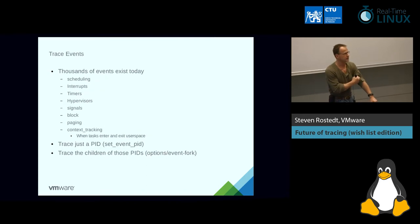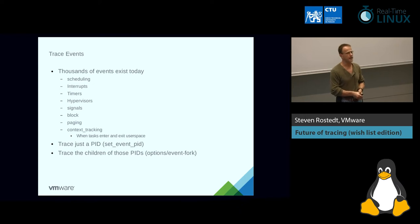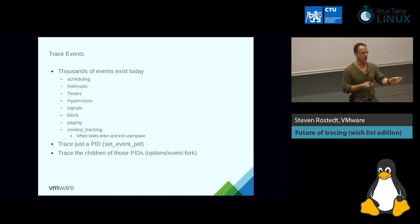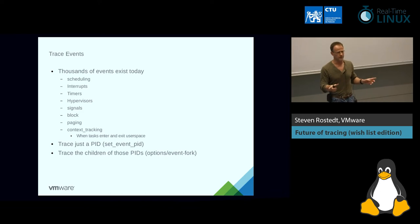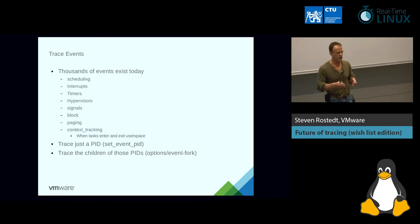Trace events: there are thousands of them today, and I'm sure if you've used ftrace you've used trace events. There's stuff for scheduling, interrupts, timers, things for hypervisors, and everything else. There's also set_event_pid so you can say you only want to trace a certain task, and there's the event_fork option if you're interested in tracing not just the task you put in but also any forks it does. This is a different utility than the ftrace function tracing utility - they're separate, so you have to put your PID in both files and set both options if you want children traced.